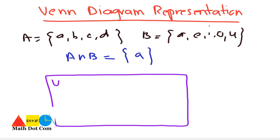As they are overlapping, we will draw them in the overlapping manner. Then we will label it: this is A, this is B, and we are finding its intersection and the elements that are common is a.